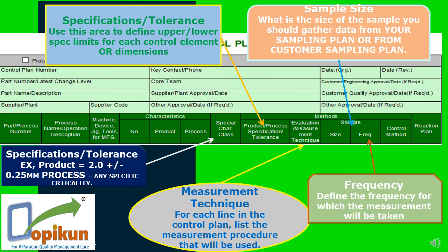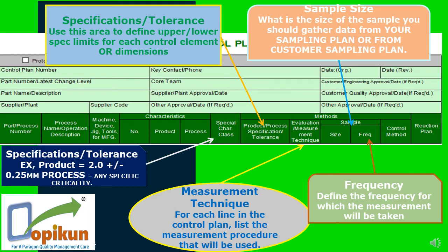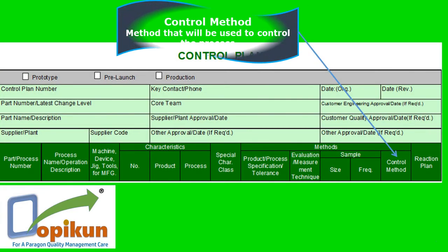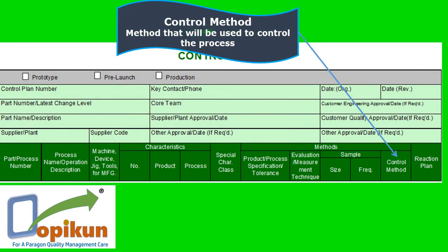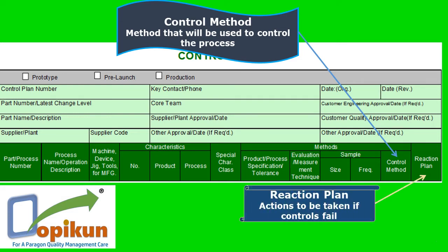Specifications and tolerance example: product equals 2.0 plus 0.25, with any specific criticality on the product. Control method — the method that will be used to control the process. Reaction plan — actions to be taken if controls fail.